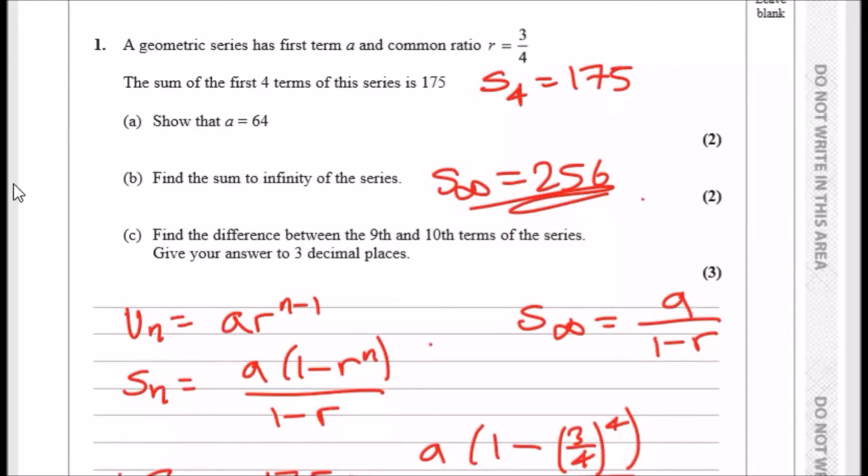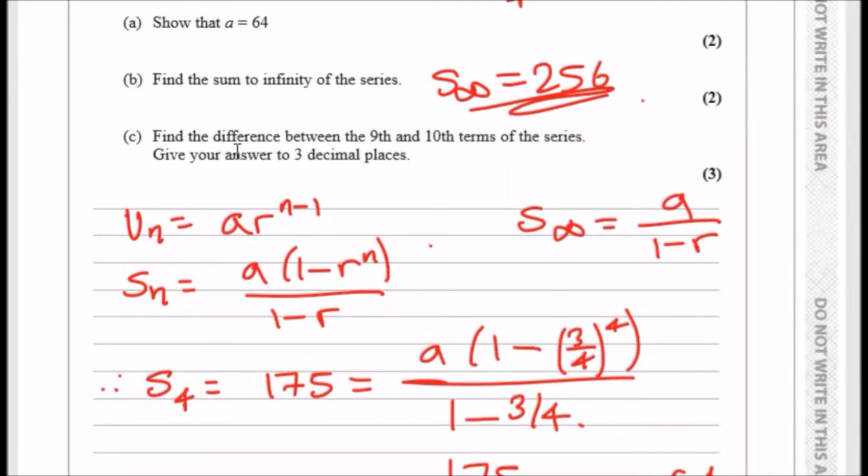Done. So easy, really. Now, part C. Find the difference between the ninth and the tenth terms of the series. Okay, so find the ninth and tenth terms. Give your answers to three decimal places.